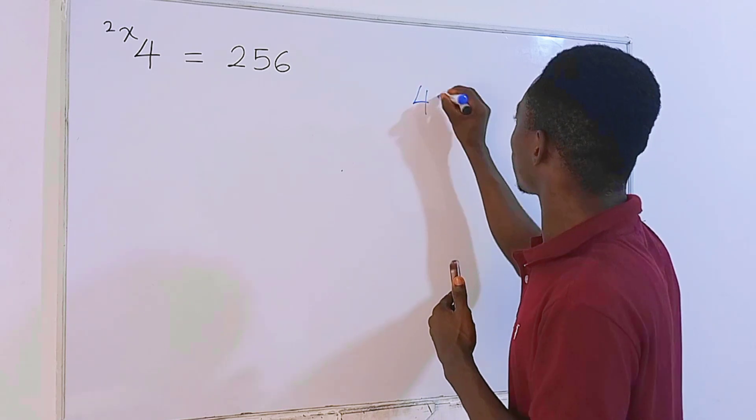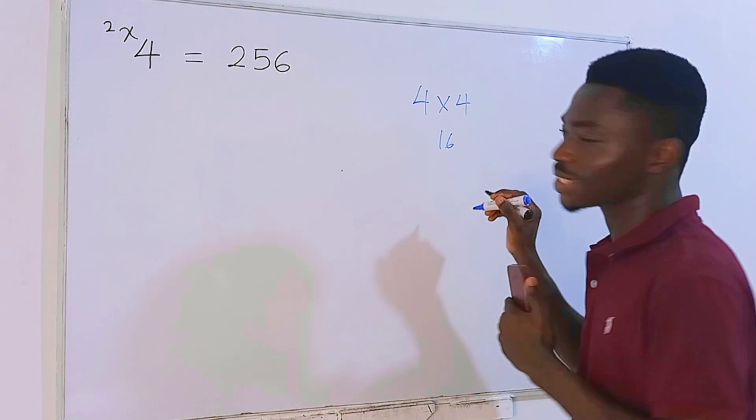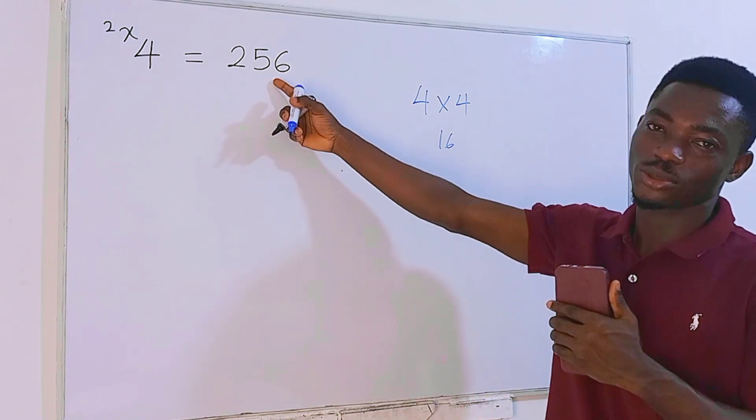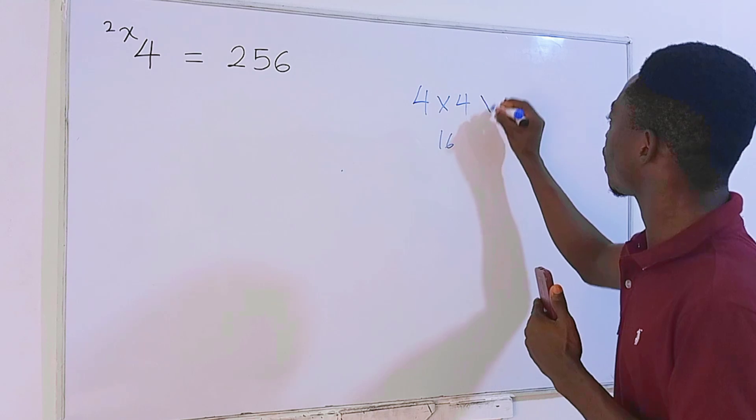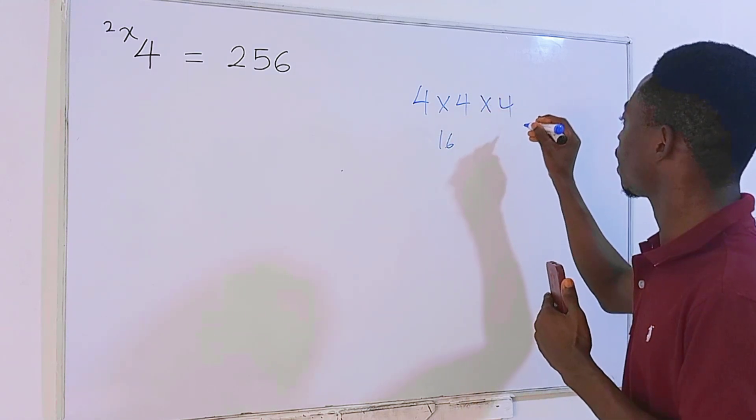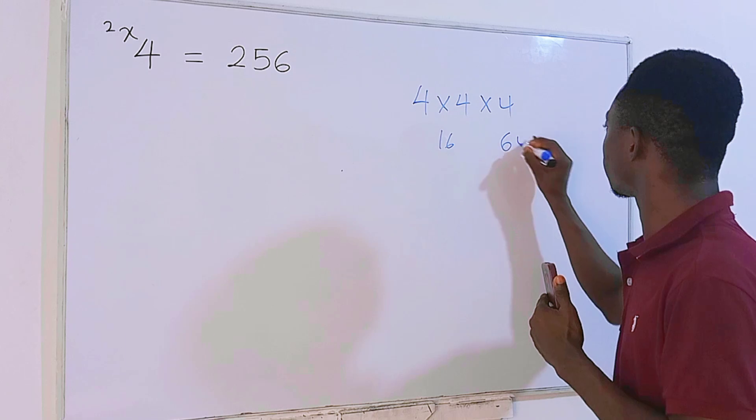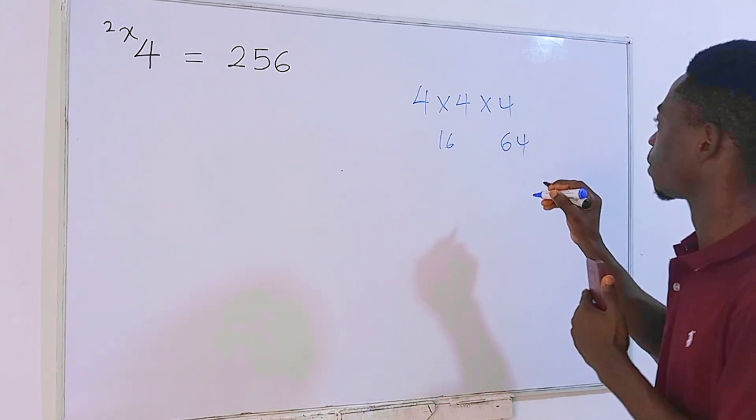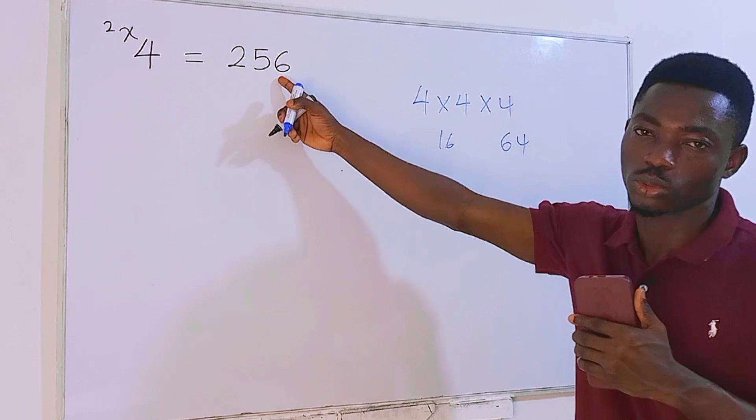4 times 4 is giving us 16, which is never closer to 256. So I'll multiply this by 4 again and we're getting 64. So we're not close to 256 yet.